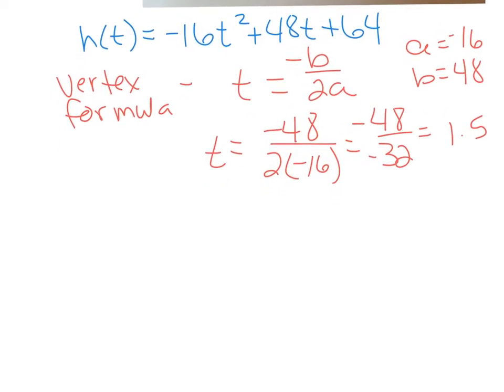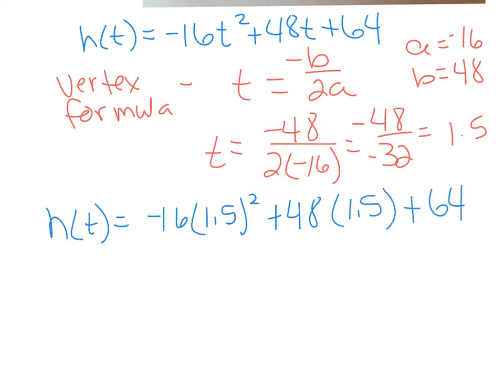And we'll be finding height. The maximum height will be -16 times 1.5² + 48 times 1.5 + 64. And when you simplify all of that, you're going to use a calculator. This ends up being -36 + 72 + 64, which is actually 100. So the maximum height for this object is 100 feet.